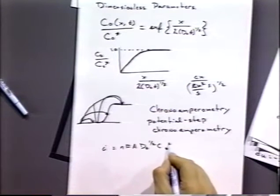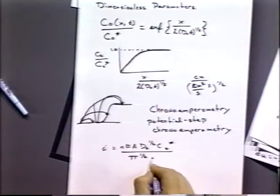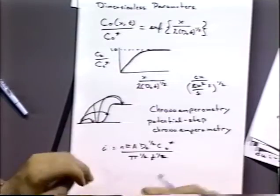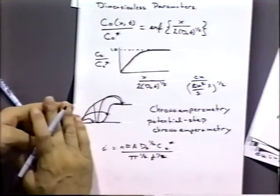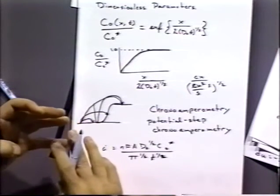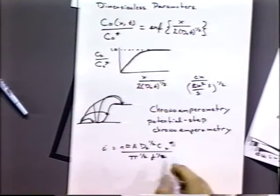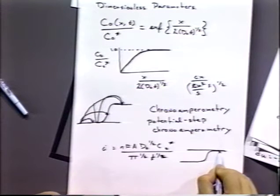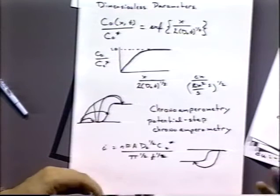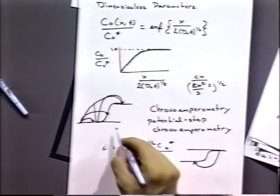Chronoamperometry for the Cottrell case gives I = nFA·D_O^(1/2)·C*_O / (π^(1/2)·t^(1/2)), assuming planar diffusion, no R initially present, no migration, and concentration of O equal to zero at the electrode surface. You could easily derive the analogous equation for R present initially — just substitute R for O and add a negative sign — covering the case where we step from a reduced species to an oxidized one.